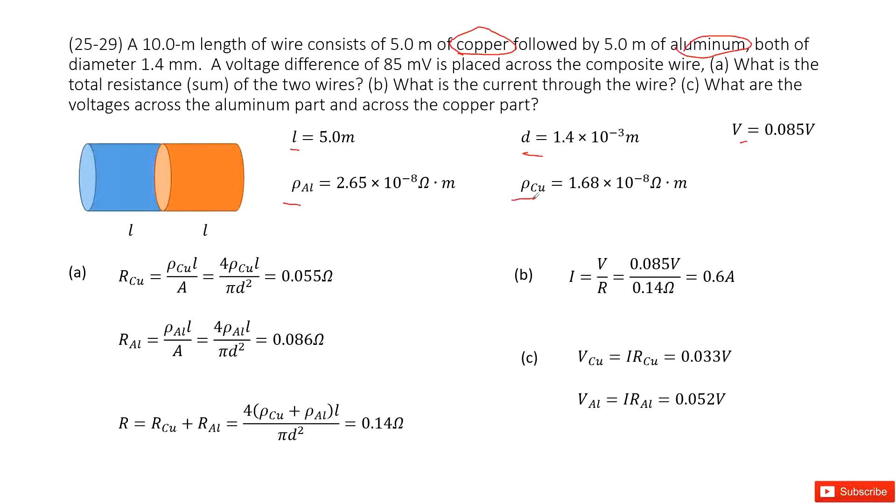So first one, the resistance for copper is the resistivity for copper times L divided by A. A can be replaced as pi R squared. R can be replaced as the diameter over 2, so you can get this term there. We did this calculation several times. You can check the previous video if you don't understand this part. Input all the given quantities, get the answer there.